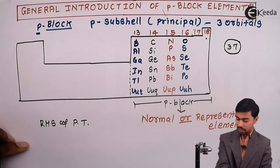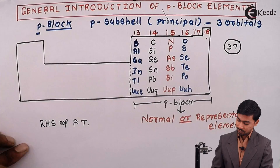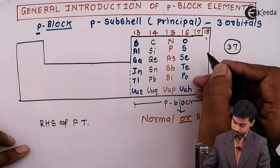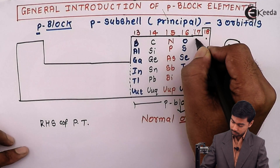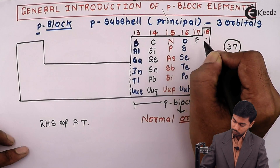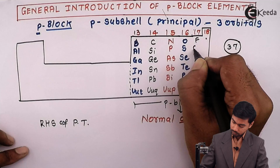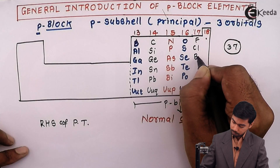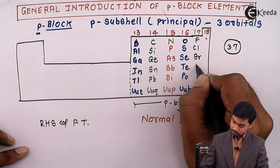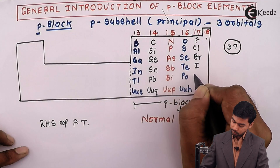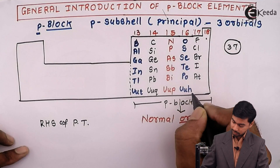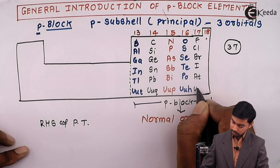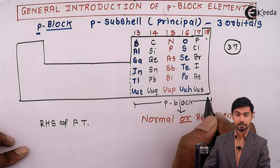In case of group 17, the elements are Fluorine, Chlorine, Bromine, Iodine, Astatine, and Ununseptium.